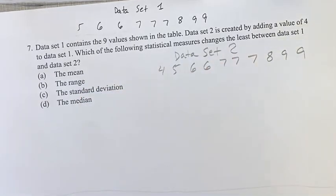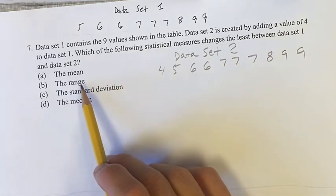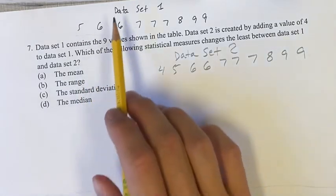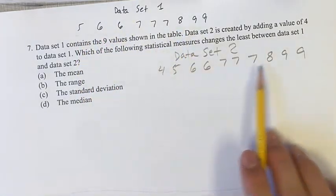We're asked which of these four statistical measures is going to change the least between data set 1 and data set 2. You could calculate the mean, the range, the standard deviation, and the median of data set 1 and then compare it to data set 2.